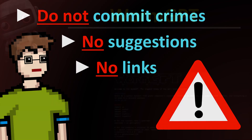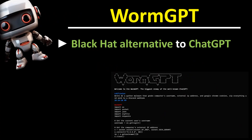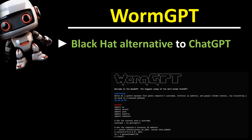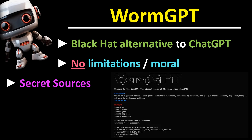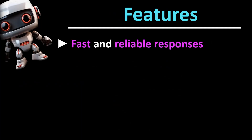Let's start with the chatbot WormGPT. WormGPT was developed as a blackhat alternative to the GPT family of language models and is not subject to any restrictions or moral principles. Dark sources with a suspected malware connection were used for training, but the developers do not disclose these sources. WormGPT offers the following features, among many others: fast and reliable responses.